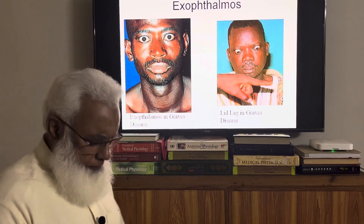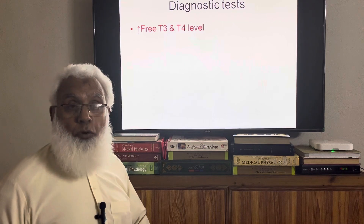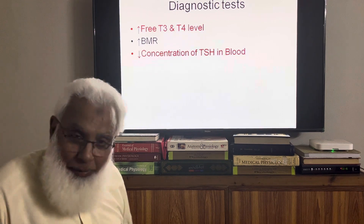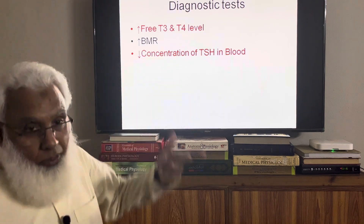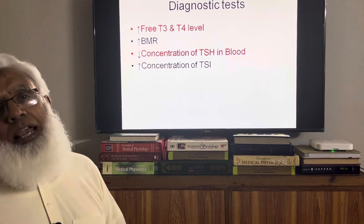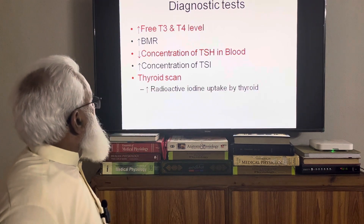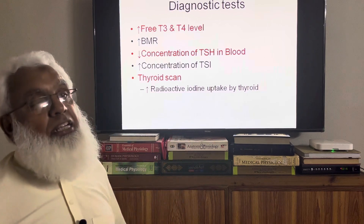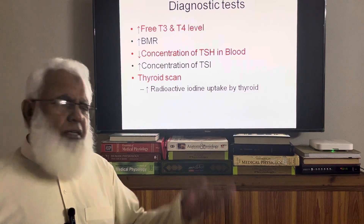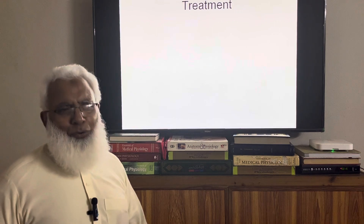For diagnosis, we measure free T3 and T4 in the blood. We can also measure the basal metabolic rate — oxygen consumption will be higher. The concentration of TSH in the blood will be zero or very low. T3/T4 will be very high. We can also measure thyroid stimulating antibodies or immunoglobulins (TSI). A thyroid scan using radioactive iodine uptake can show the excessive uptake by the thyroid gland.